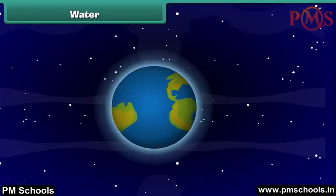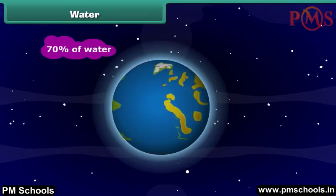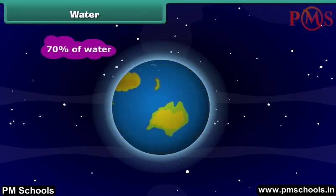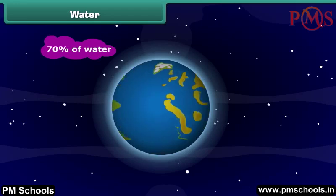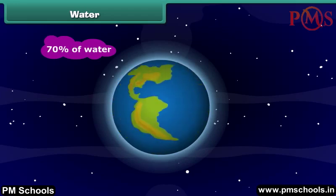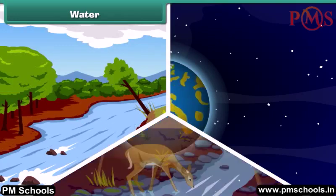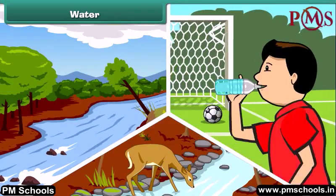About 70% of earth's surface is covered by water. Water is also an important natural resource. It is necessary for the survival of plants, animals and human beings.